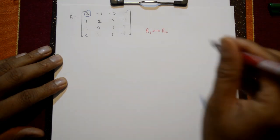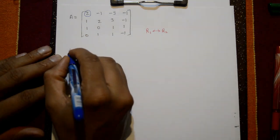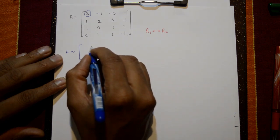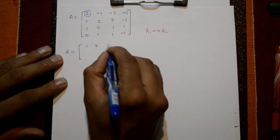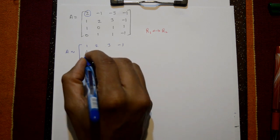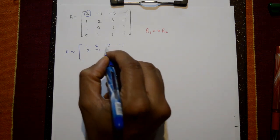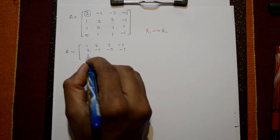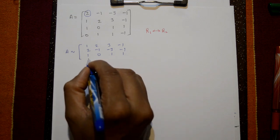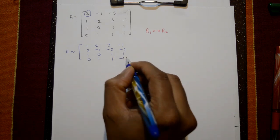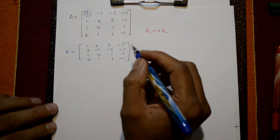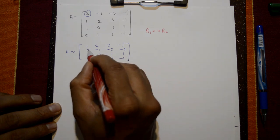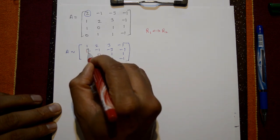After interchanging R1 and R2, the equivalent matrix has first row: 1, 2, 3, -1; second row: 2, -1, -3, -1; third row: 1, 0, 1, 1; fourth row: 0, 1, 1, -1. The leading number is now 1. Below that column we have elements 2 and 1 which we need to make 0.